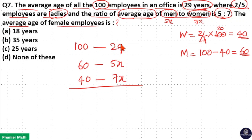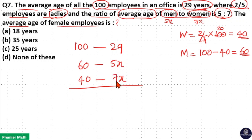Total age equals average age multiplied by number of employees, that is 29 × 100. This total age equals total age of men plus total age of women. Total age of men is 5x × 60, and total age of women is 7x × 40.